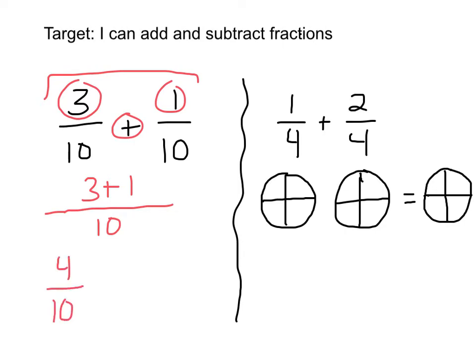Most of the time you're going to have to reduce the fraction to lowest terms. And since 4 tenths can be reduced, they're both divisible by 2. So a common factor of 4 and 10 is 2. 4 divided by 2 is 2, and 10 divided by 2 is 5. So 3 tenths plus 1 tenth is 2 fifths.